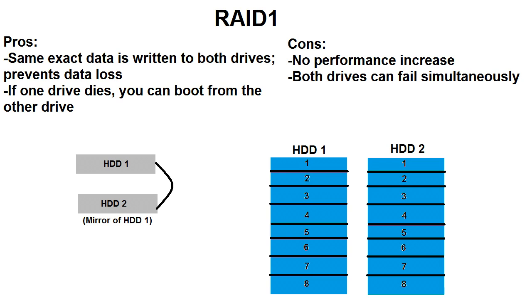Next up we have RAID 1. RAID 1 also uses a minimum of two drives. What it does is instead of writing half the information on each drive, it takes the information written on one drive and does a complete copy — a complete mirror image — on the second drive. So if one of your drives fails, you have a backup without having to worry, because it does it automatically for you. Keep in mind, you have to look in your motherboard manual and set up the RAID through your BIOS, because every motherboard is different in the way they handle this.